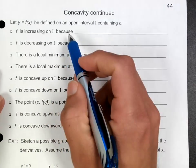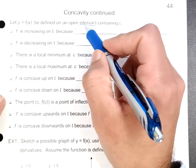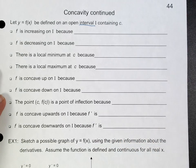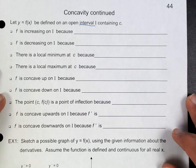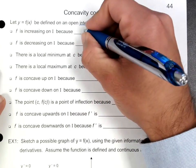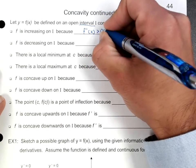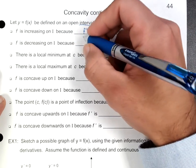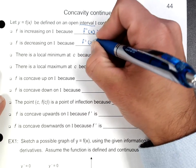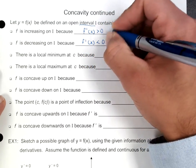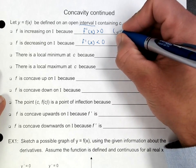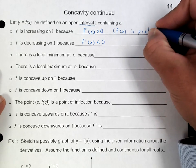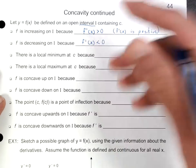They're calling this open interval i. If f of x is defined on an open interval i containing c, if f is increasing on i, that's because the derivative is positive — we've talked about that many times. If the derivative is positive, then f is going to be increasing. If f is going to be decreasing, then the derivative is going to be negative. You might want to write f prime of x is positive — that's the same thing.